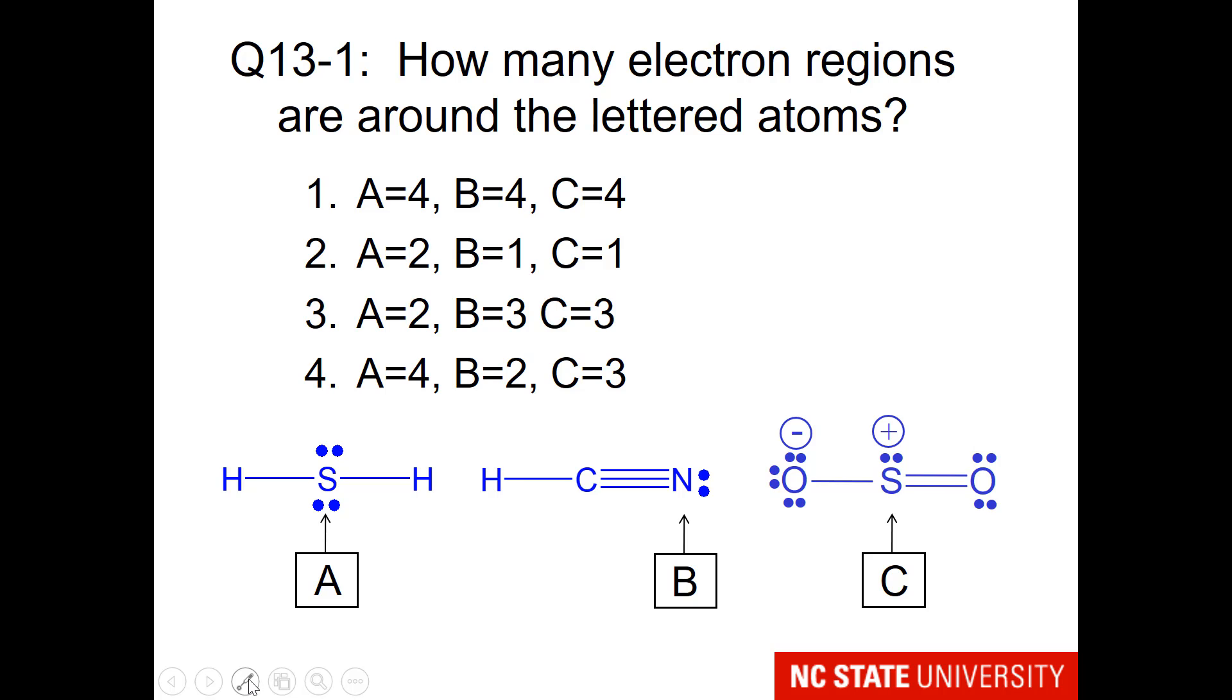So here is a question for you. How many electron regions are around the lettered atoms? In order to do this, one needs to focus in on just that particular atom. And what I see when I look at this sulfur is one, two, three, four electron regions. So please do the same for the nitrogen and the sulfur.